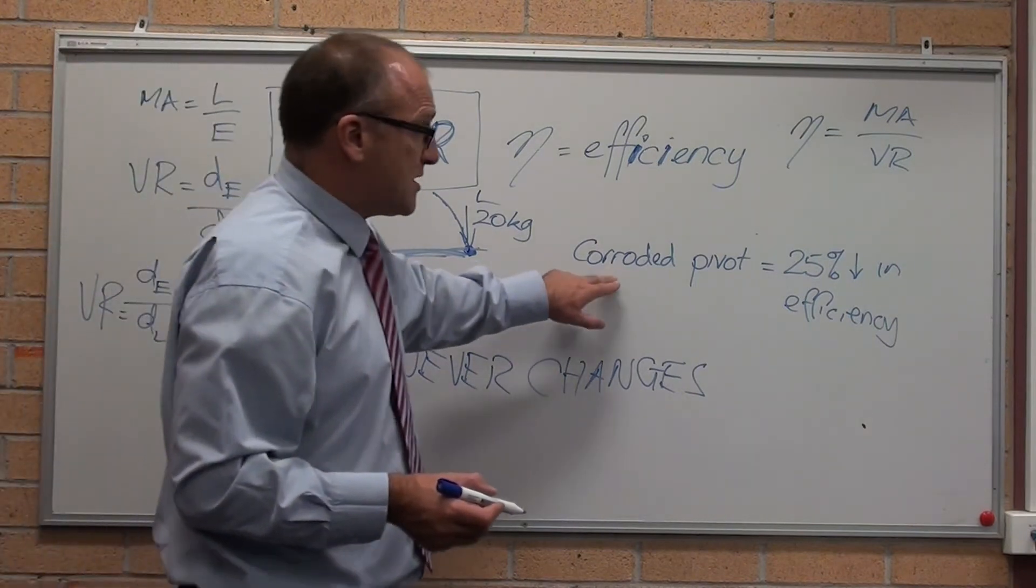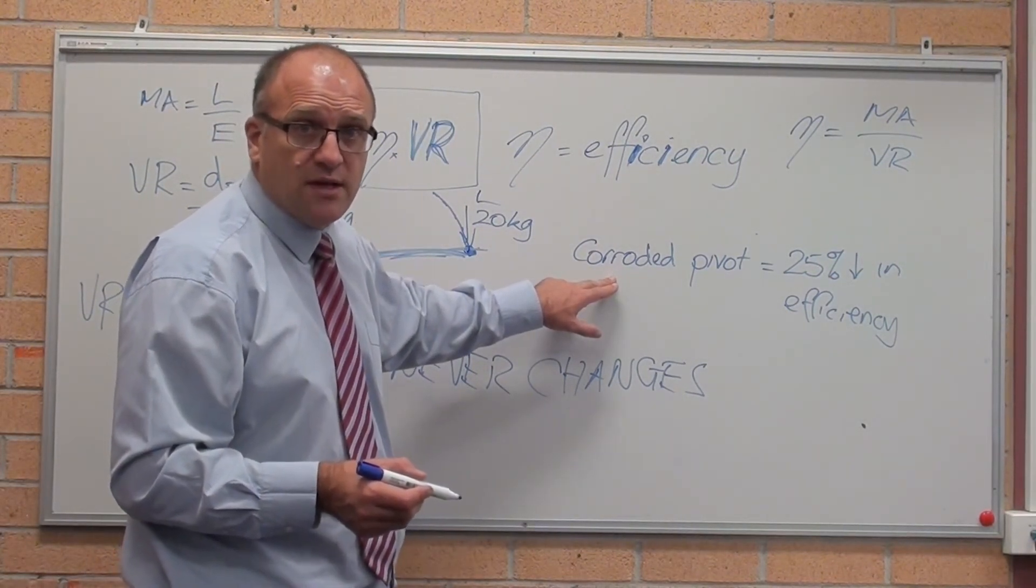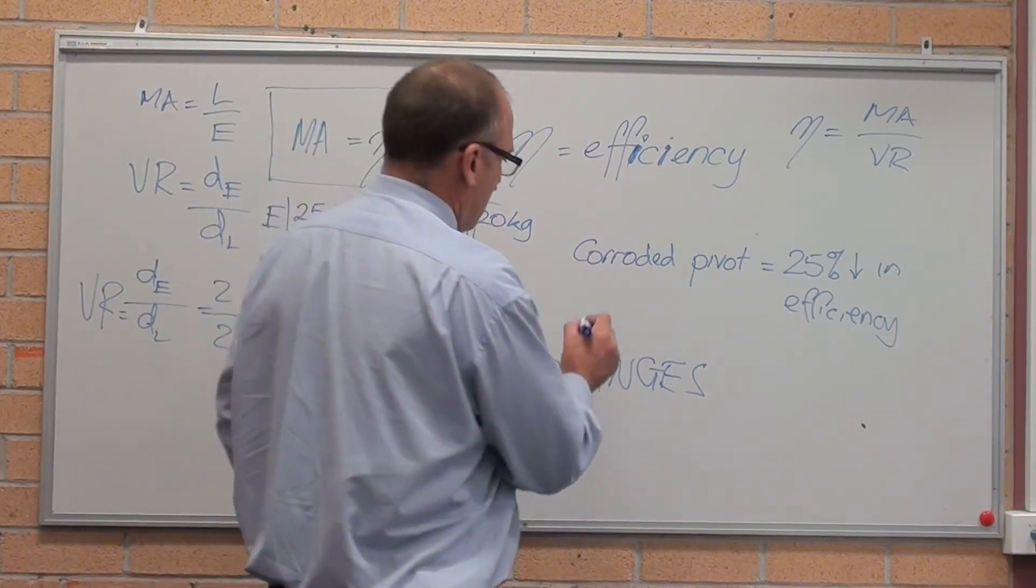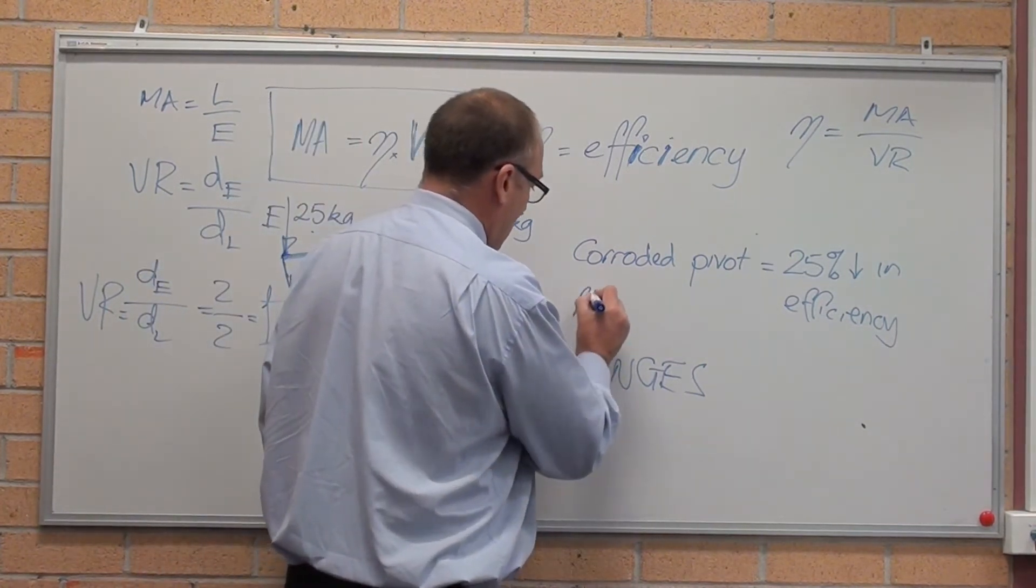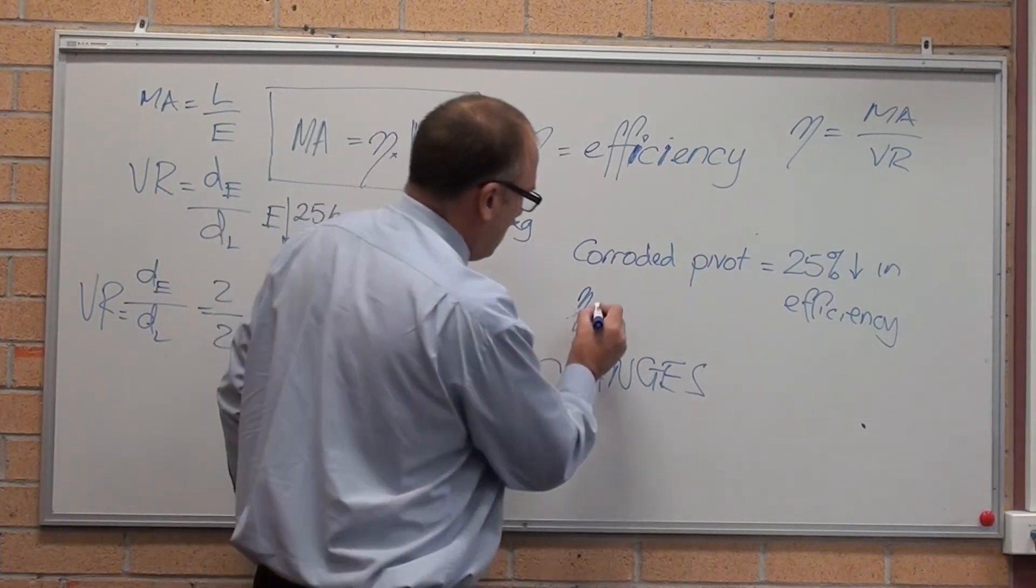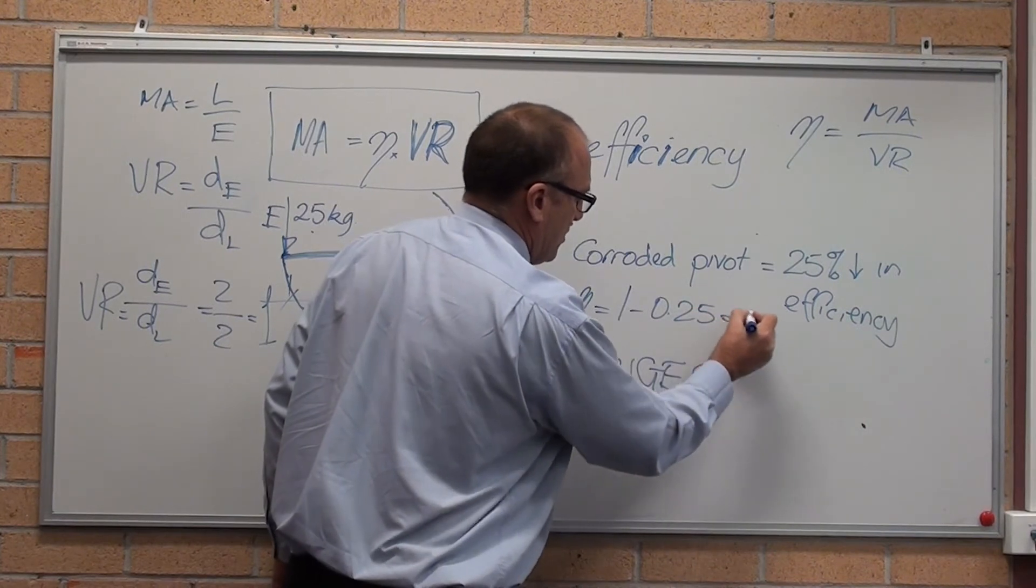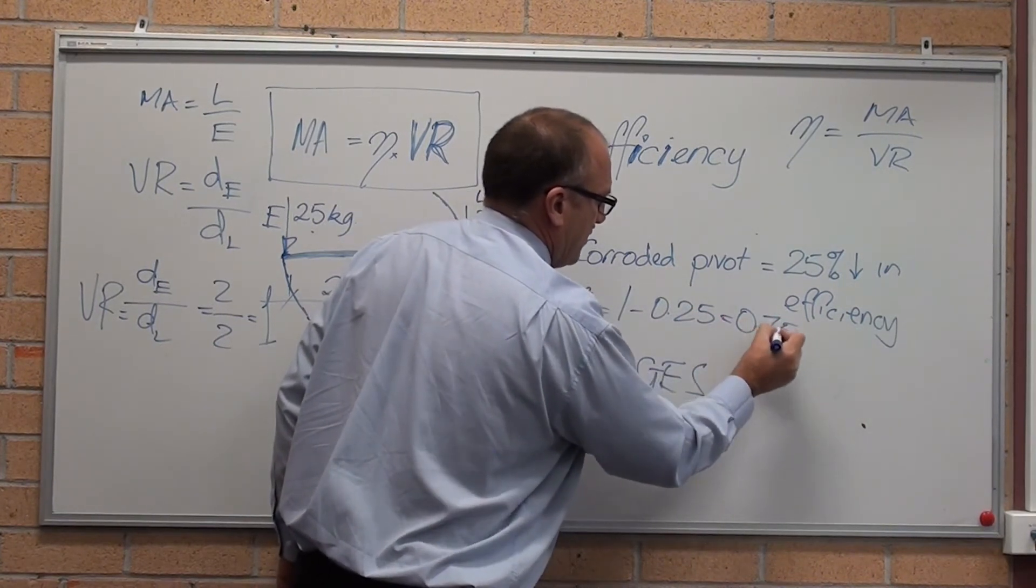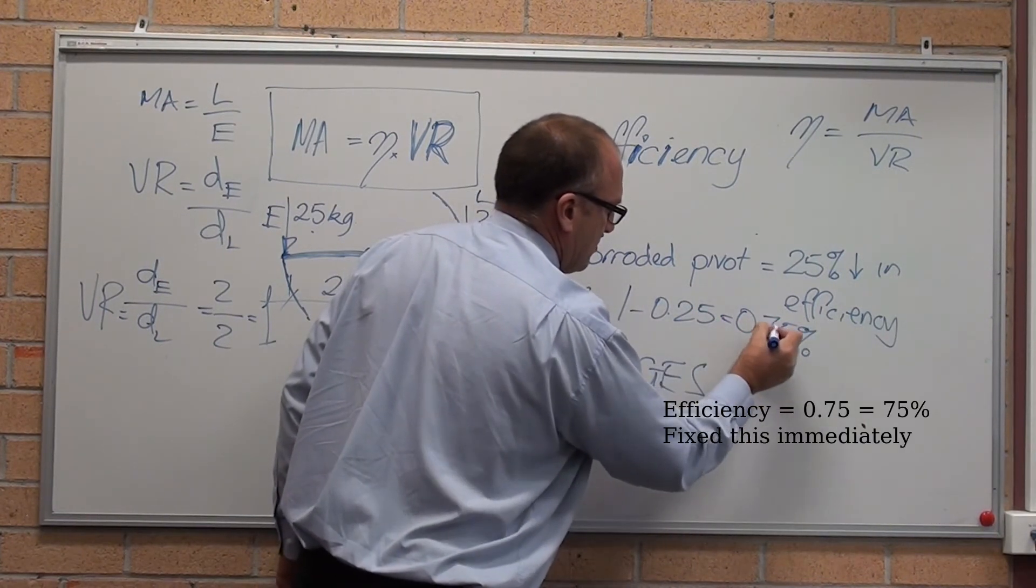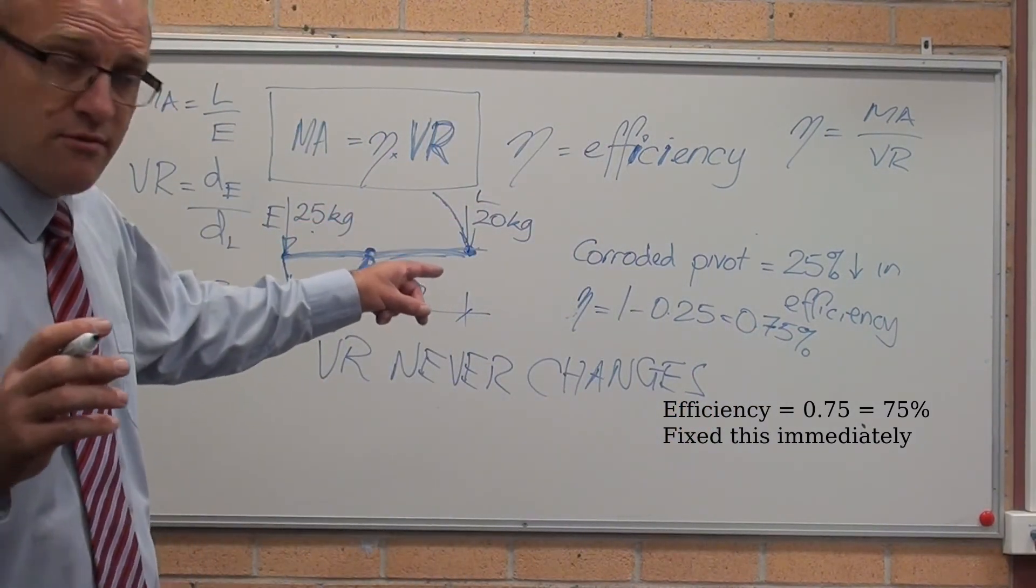The mechanical advantage, it says the pivot is corroded and reduces efficiency by 25%. So let's assume we started out with a highly efficient seesaw. So new equals 1 minus 0.25 equals 0.75%.